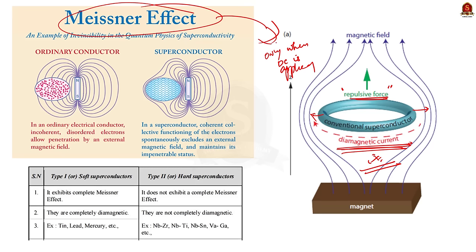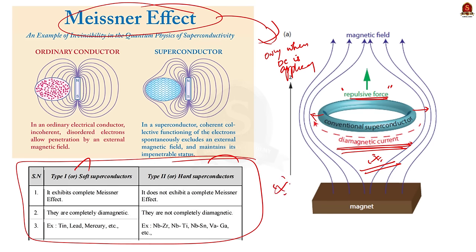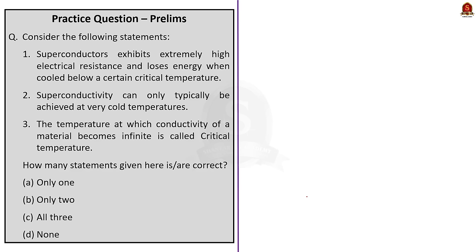The difference between the two types is given in the form of an image — you can pause the video and go through it. Because of these unique properties, superconductors have numerous applications in medical diagnostics, computing, power generation, advanced electronic circuits, and many other fields. In this discussion, we saw about the basic properties of superconductors and their various applications.